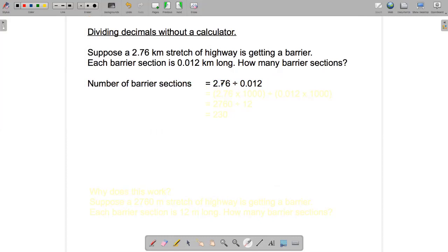So one way to approach a problem like this is to create an equivalent division problem that just uses whole numbers. And the steps for doing that are first to look at the divisor, which is the second number, the number you're dividing by. Count the number of digits after the decimal place, which is 3 in this case,